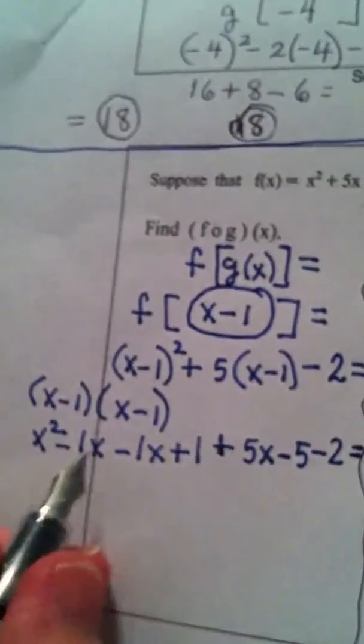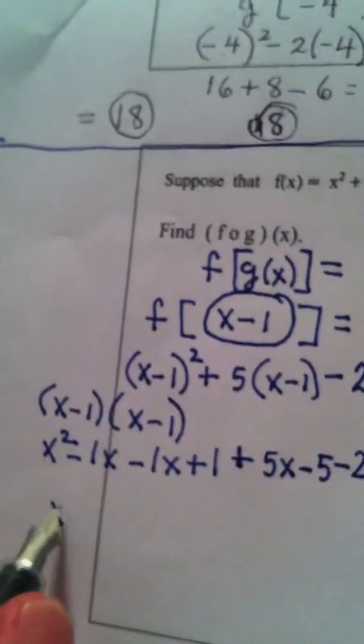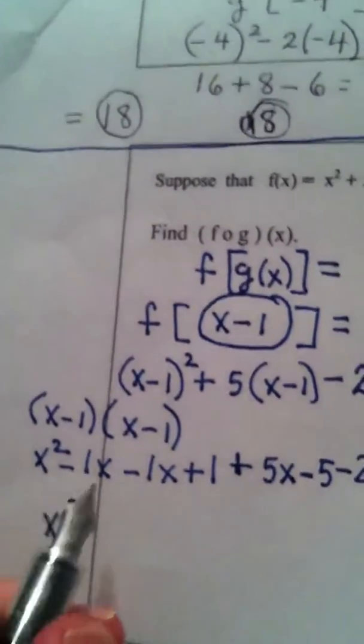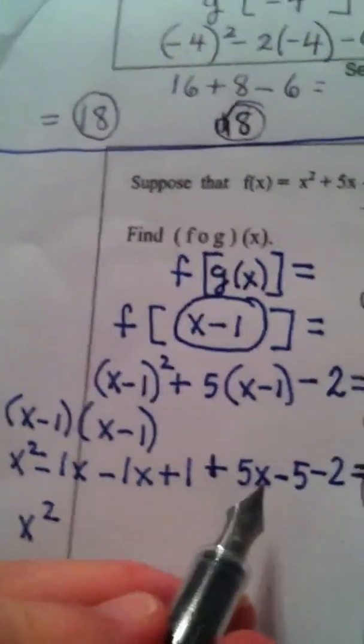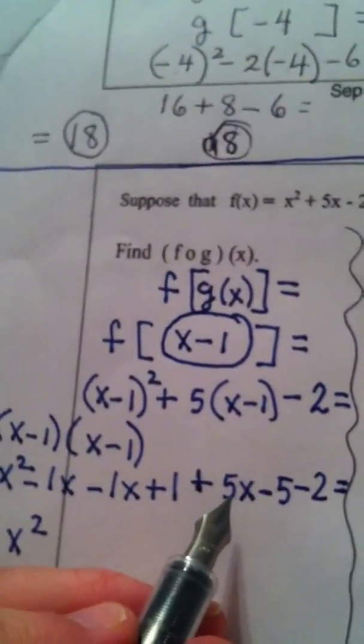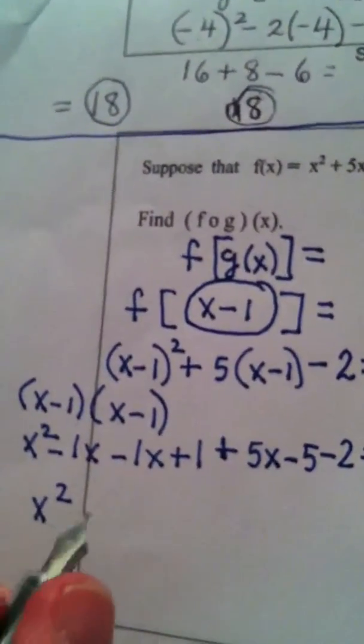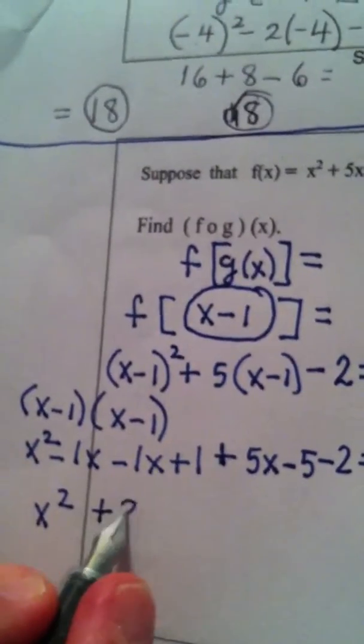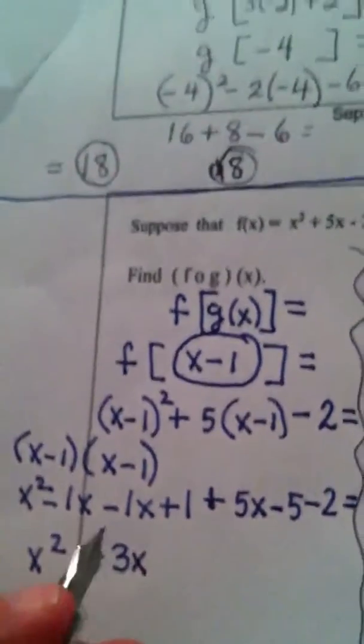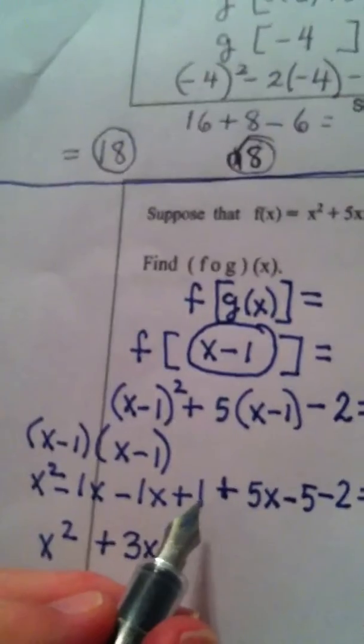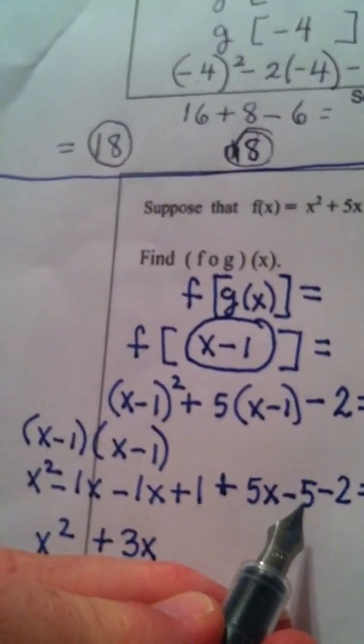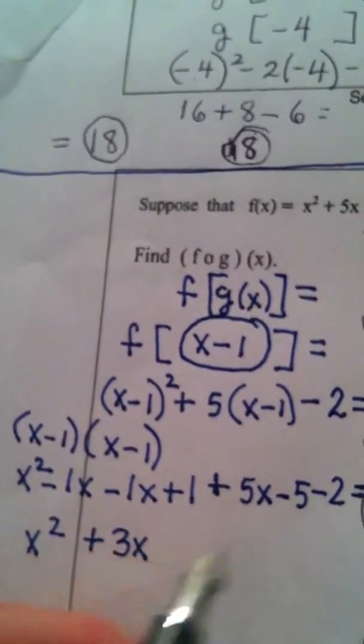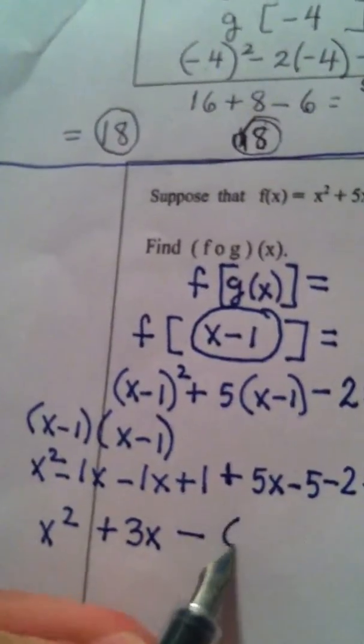So, when I collect like terms, I have x squared minus 1x minus 1x is negative 2x plus 5x is 3x. And then when we look at the constants, 1 minus 5 is negative 4, negative 4 minus 2 is negative 6.